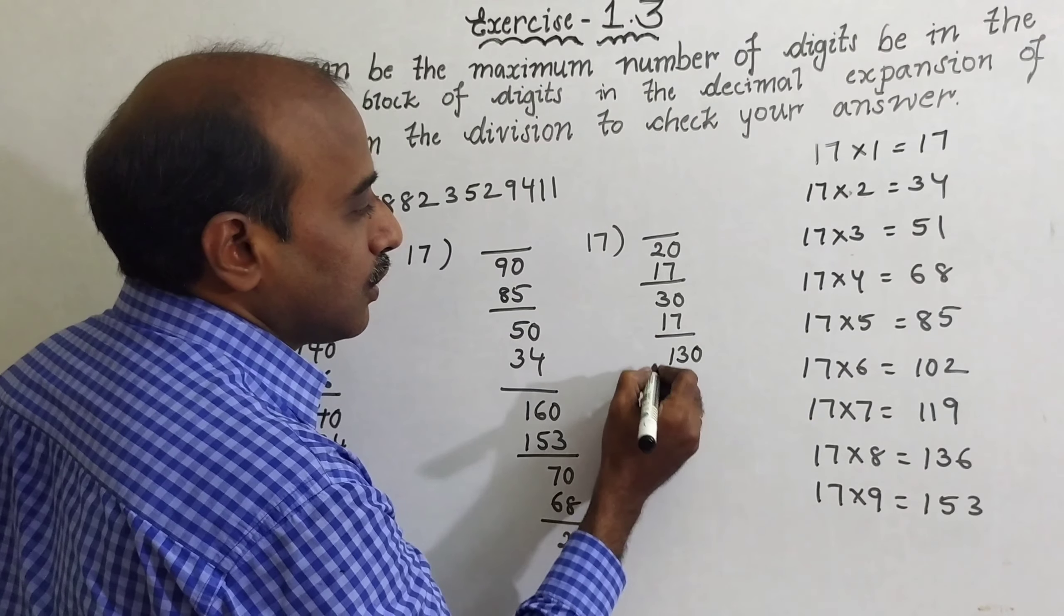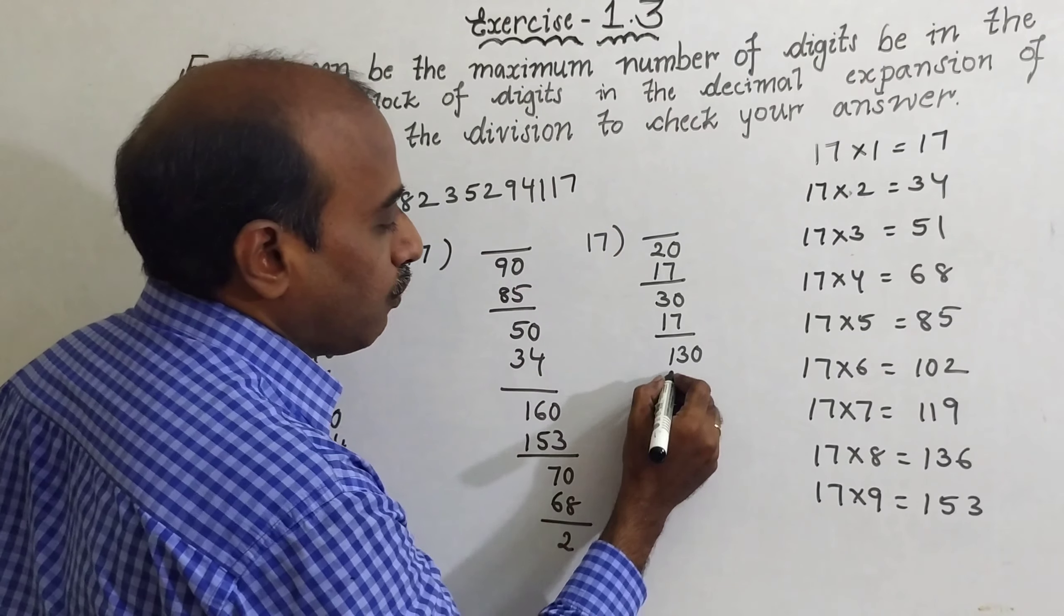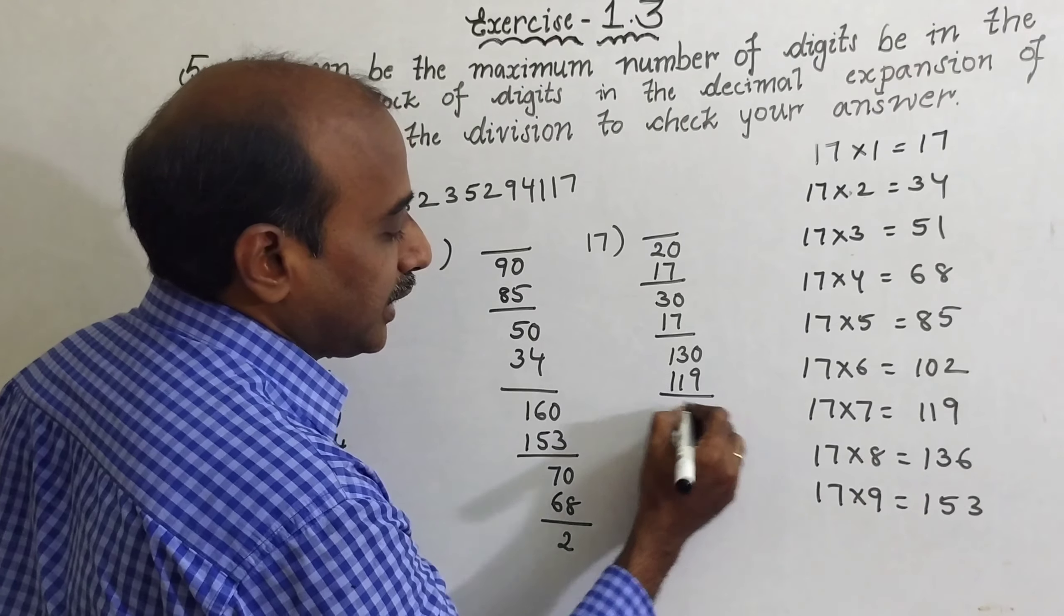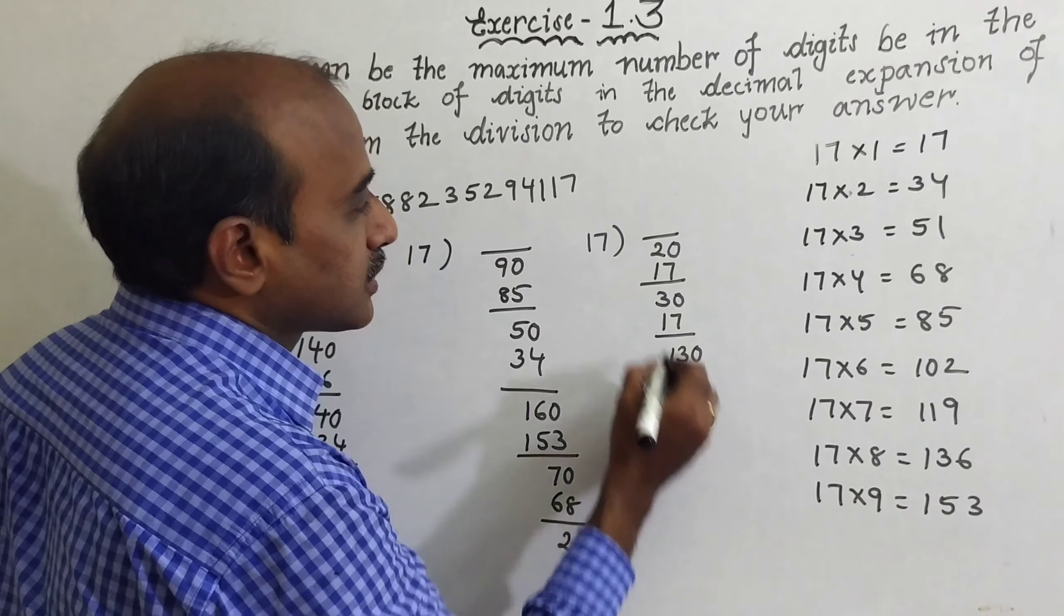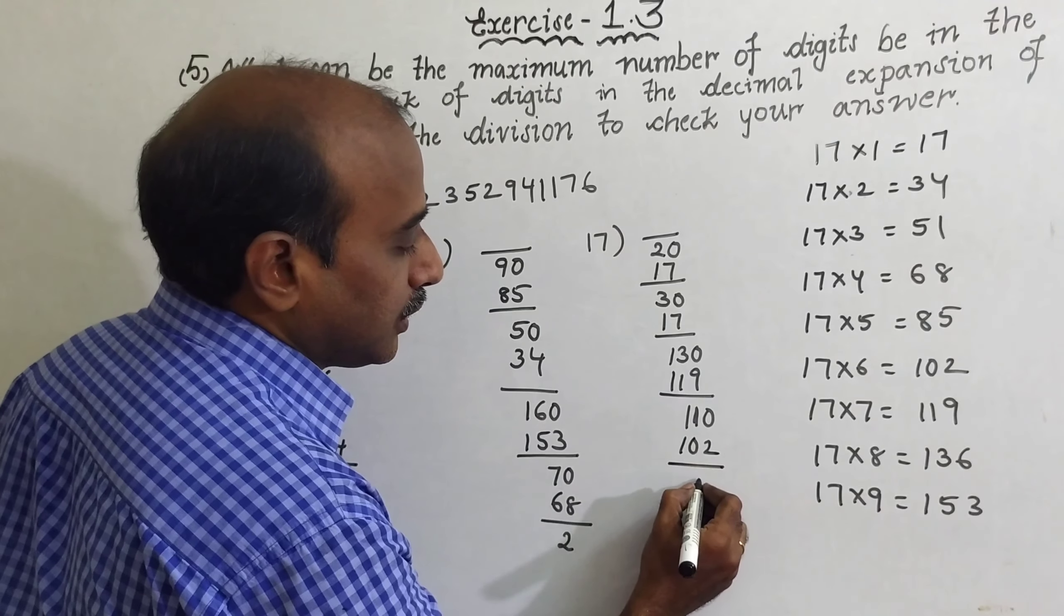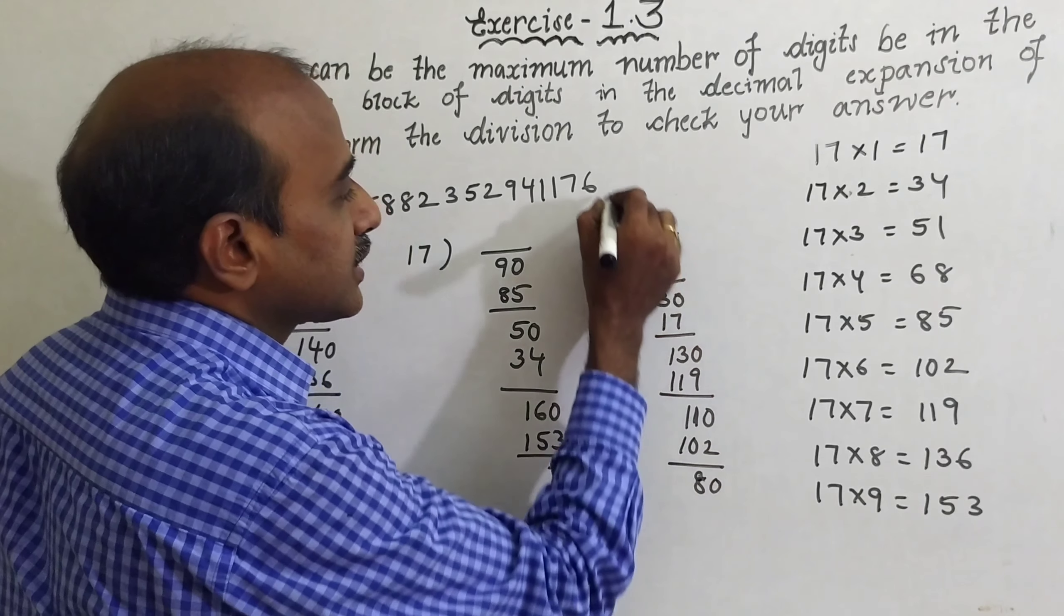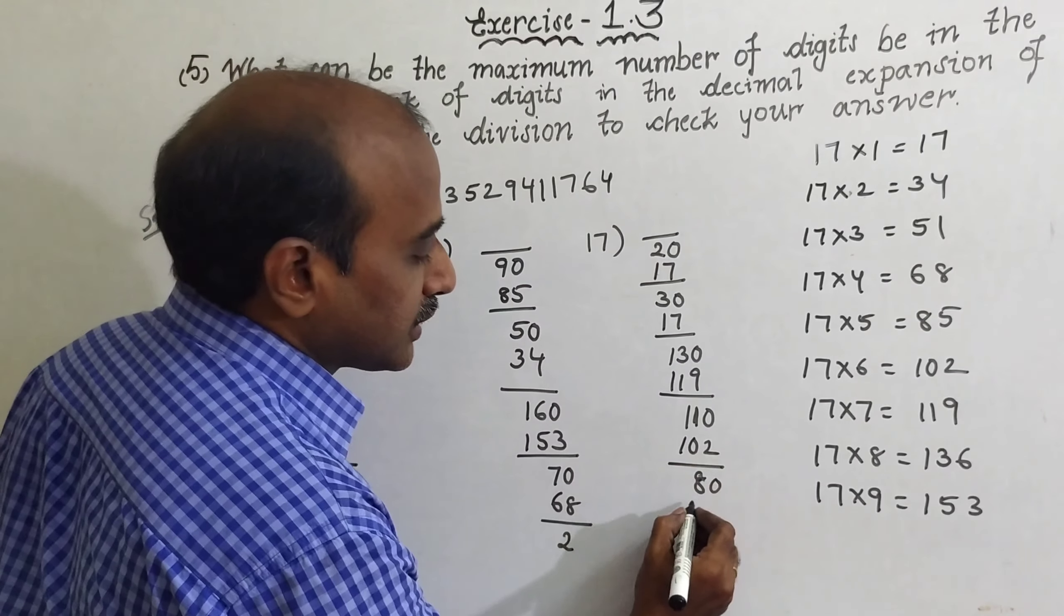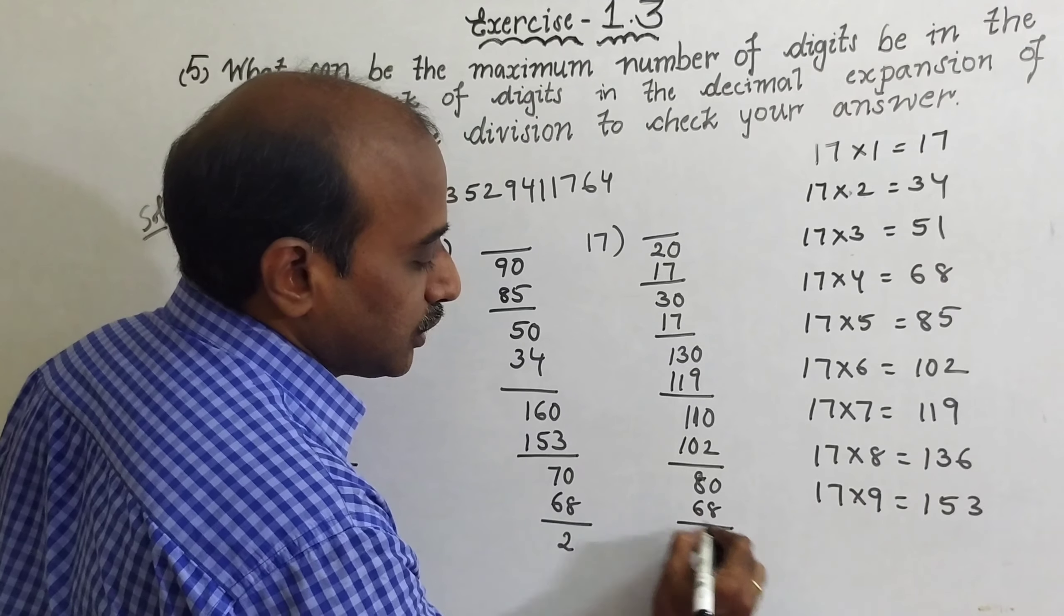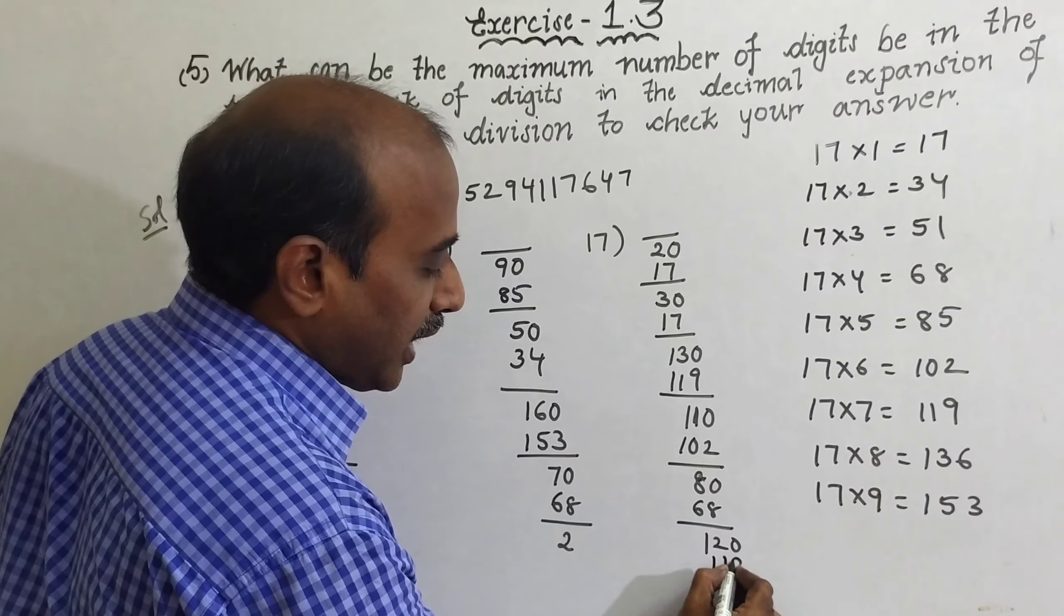130, so 130 means 17 times 7 is 119. Subtract 11. So 110, 110 means 17 times 6 is 102. Subtract 8. 80 means 17 times 4 is 68. So subtract 12. Take 120. 120 means 17 times 7 is 119. Take the subtract, 1.